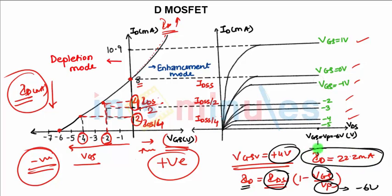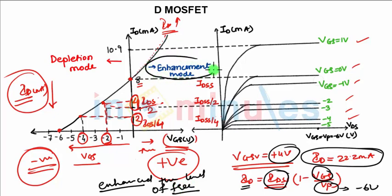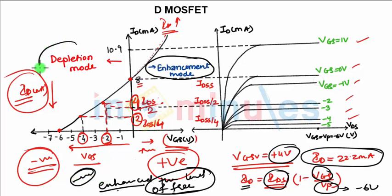This value would possibly exceed the maximum rating — current, voltage, or power — for the device. The application of positive gate-to-source voltage enhances the level of free carriers, hence this region is called the enhancement region. When you apply positive charge, the number of free carriers increases, so it is called enhancement mode operation. When you apply negative charge, the free carriers deplete, hence it is called depletion mode. Therefore, the region of positive gate voltages on the drain or transfer characteristics is called the enhancement region, and the region between cutoff and the saturation level of IDSS is called the depletion region. These are the two regions obtained from the transfer characteristics of the D-MOSFET.